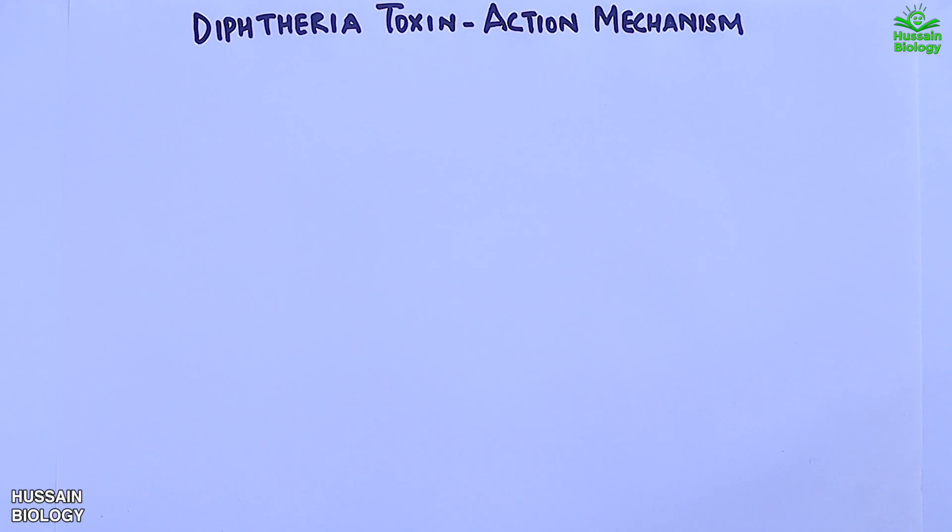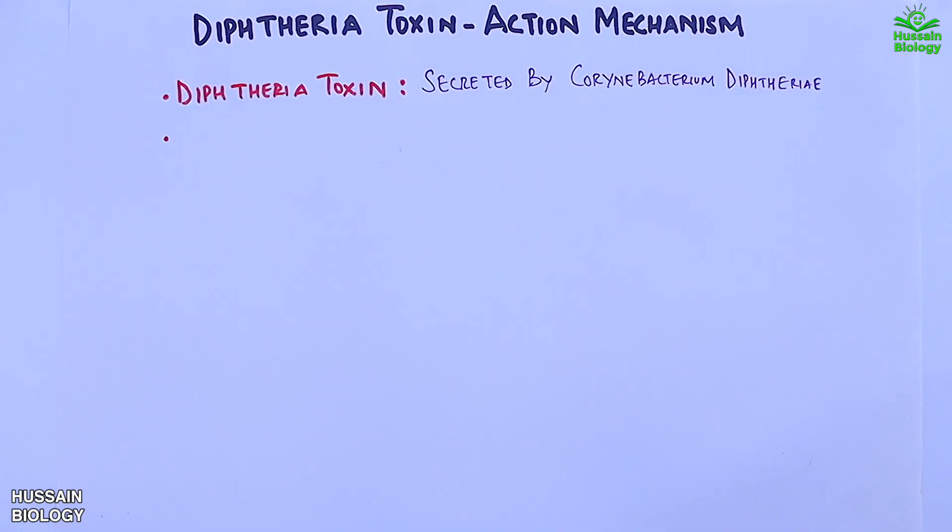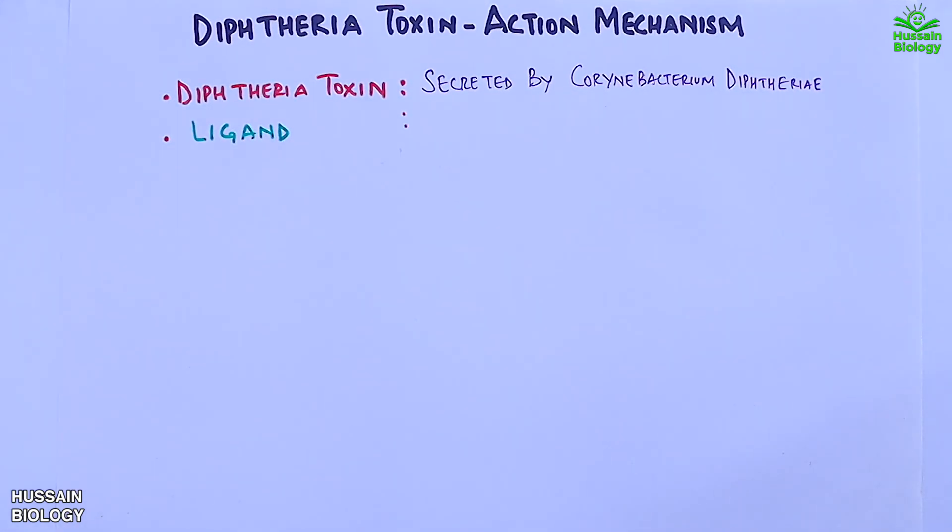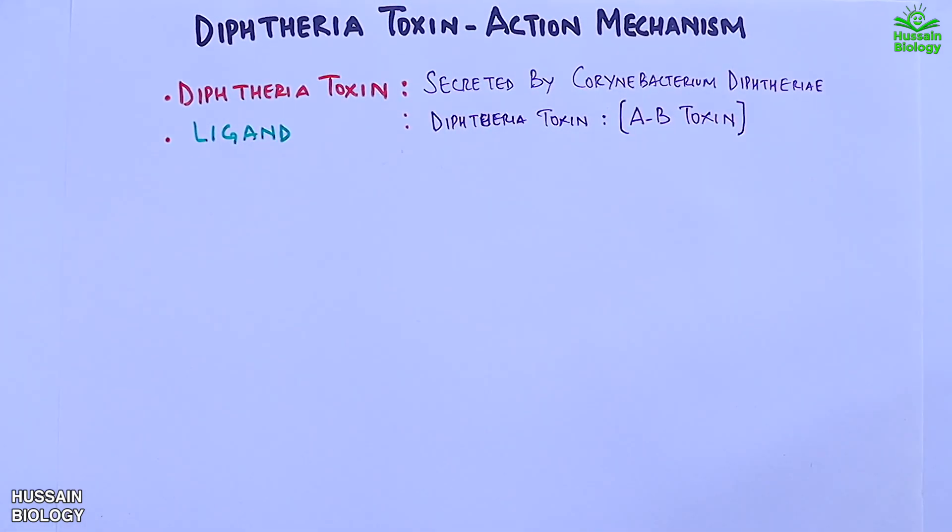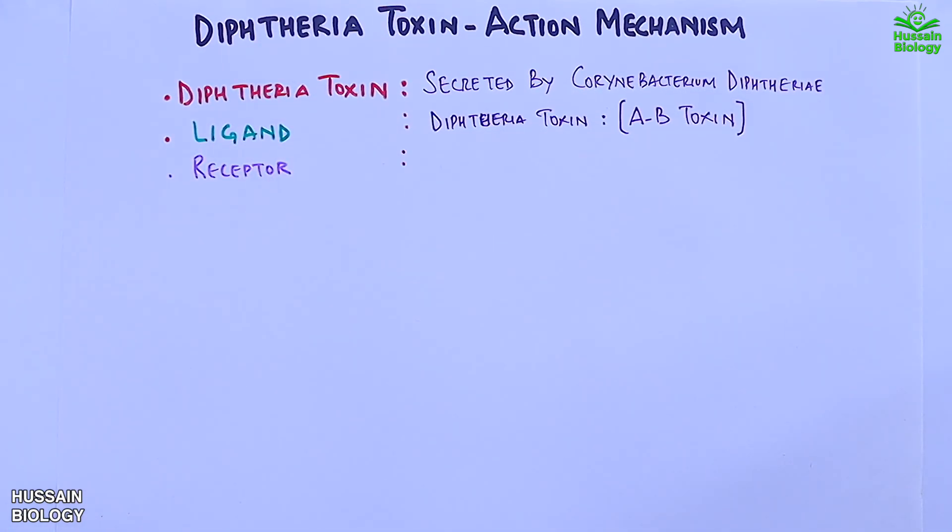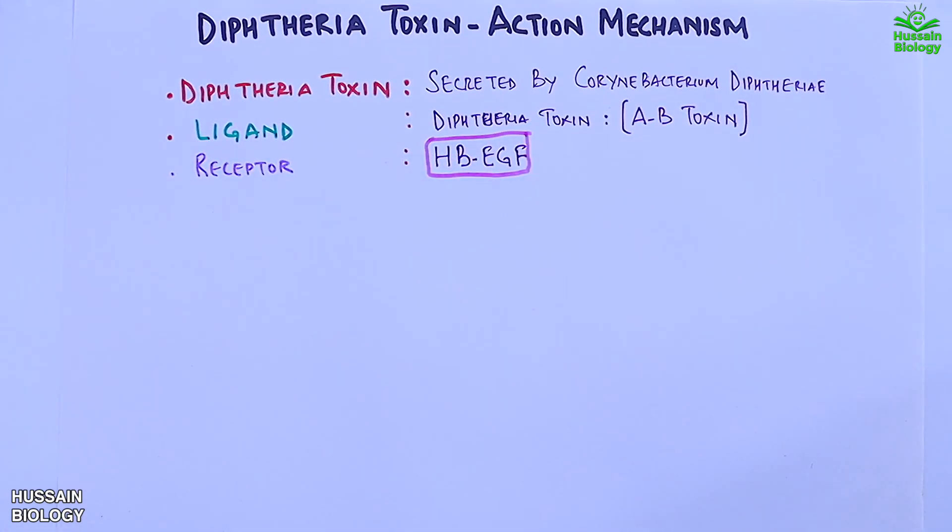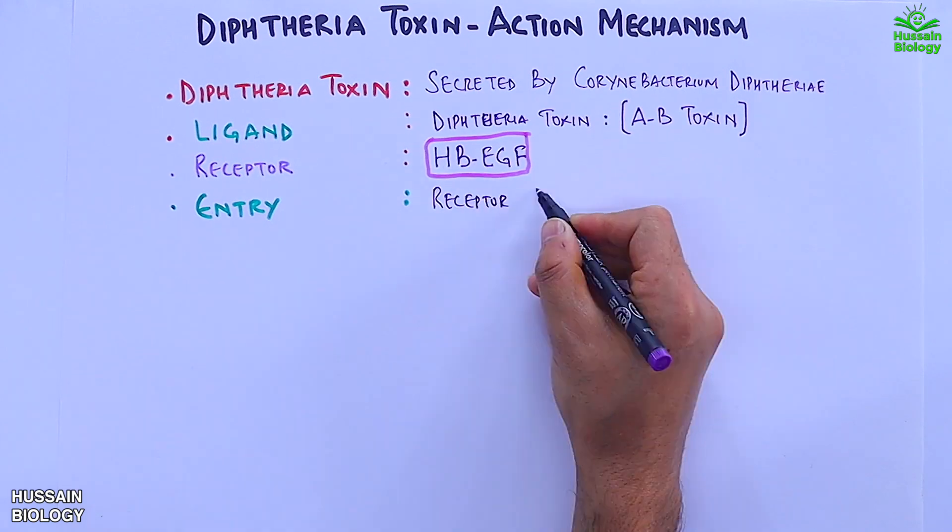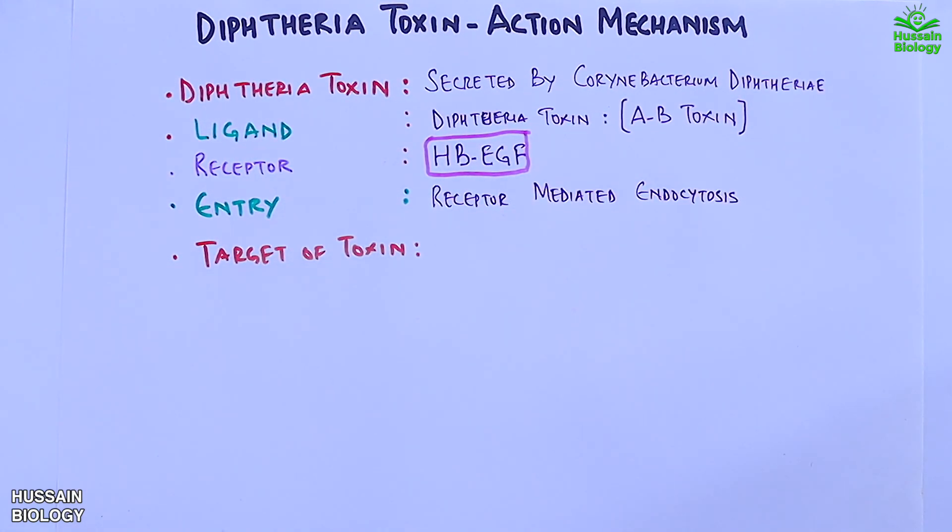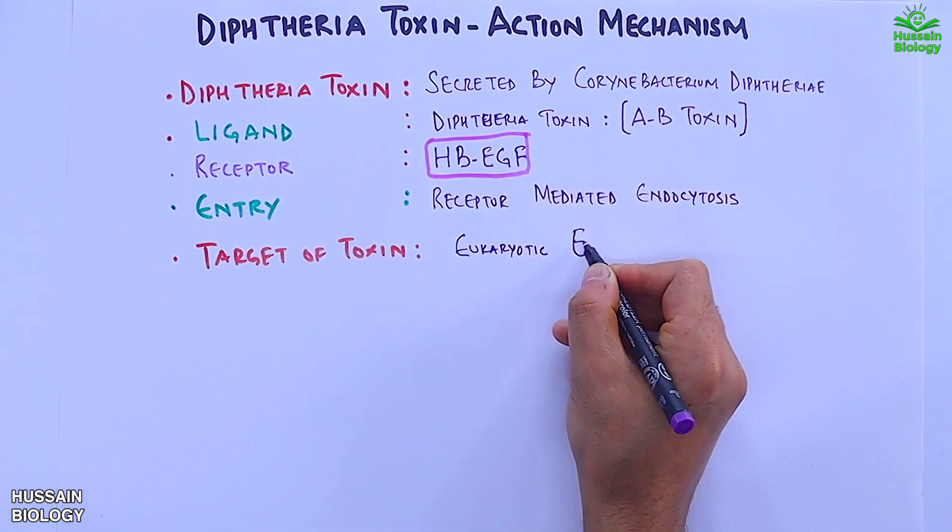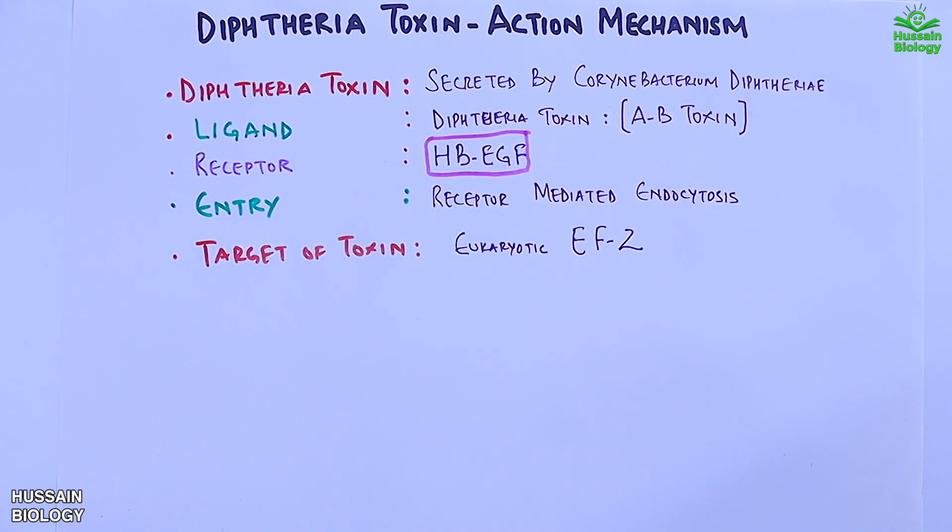First, the diphtheria toxin is secreted by Corynebacterium diphtheriae. The ligand in this pathway is diphtheria AB toxin and its receptor is HB-EGF receptor. The mode of entry is receptor-mediated endocytosis, and the target of the toxin within the host cell is eukaryotic elongation factor 2.